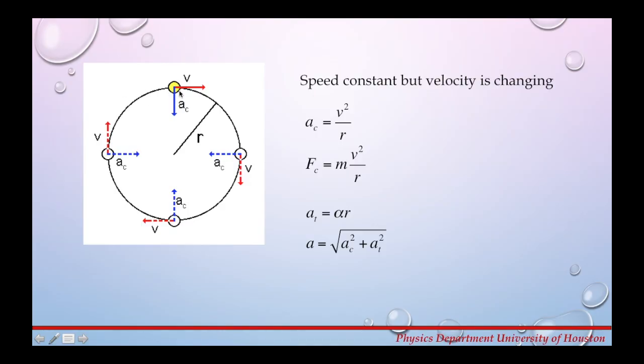So for this particular object here that's moving on the circle that has a radius r, even though its speed is constant the velocity vector is changing. Here is in this direction, here points down, here points this way, then here points up.